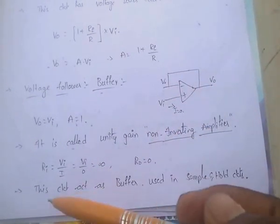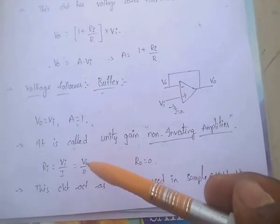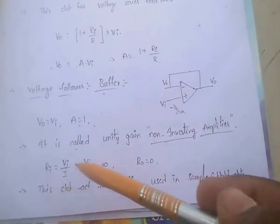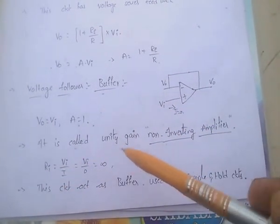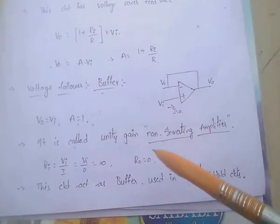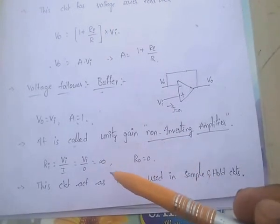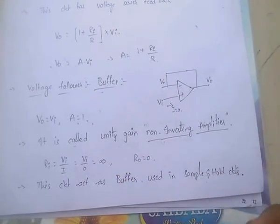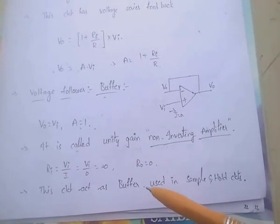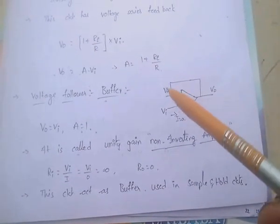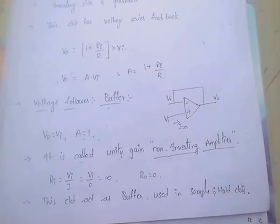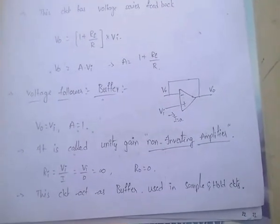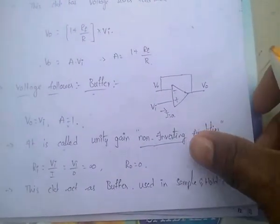Here, input resistance RI equals Vi by I; I equals 0, that means input impedance equals infinite. And output impedance equals zero. This is the ideal characteristics. This circuit acts as a buffer, and it is used in sample and hold circuits.